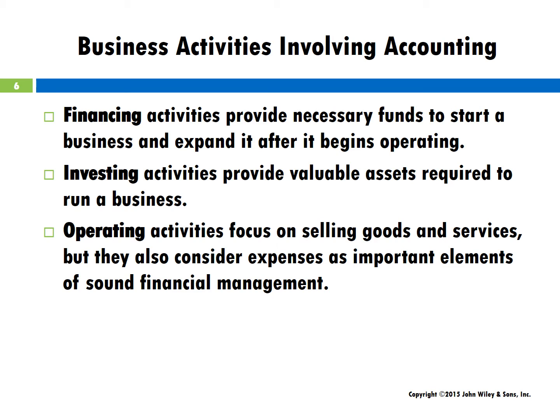The natural progression of business begins with financing, with subsequent steps including investing, which leads to operating the business. All organizations, including non-profits, perform three basic activities: 1. Financing, which is funding. 2. Investing, which involves assets to run a business. 3. Operating — selling goods and services or managing expenses. Without financing activities, a business or non-profit may be hard pressed to get to the next level to perform investing or operating activities.